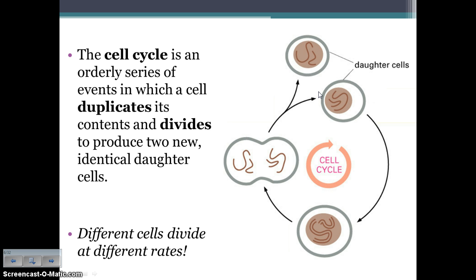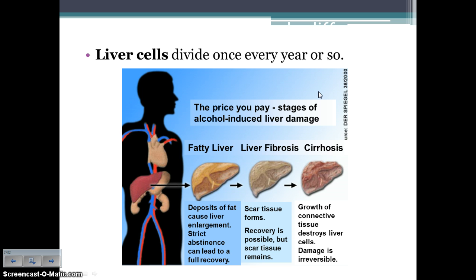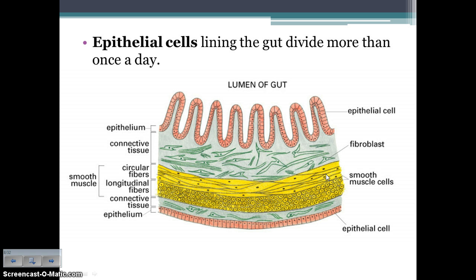Different cells divide at different rates. Liver cells, for example, only divide every year or so. That is why when you damage your liver it is so harmful — your body can't replace those cells fast enough. Someone who damages their liver cells by drinking alcohol can't replace those cells fast enough, leading to cirrhosis of the liver. The epithelial cells that line your gut, on the other hand, divide more than once a day — their cell cycle is just a couple hours long — because they live in a high-acid environment that's constantly being destroyed, so you need to replace those cells all the time.